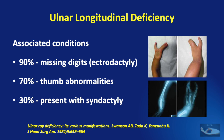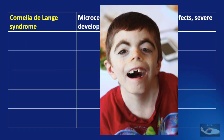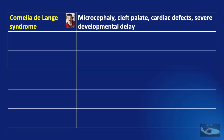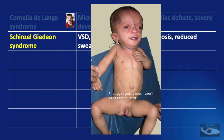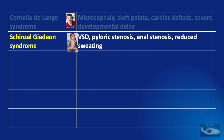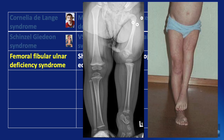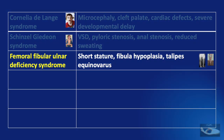The condition can also be associated with certain syndromes like Cornelia de Lange syndrome, which is associated with microcephaly, cleft palate, cardiac defects and severe developmental delay. The Schinzel-Gideon syndrome is associated with ventricular septal defects, pyloric stenosis, anal stenosis and reduced sweating. A common associated syndrome is the femoral fibular ulnar deficiency syndrome, where there is short stature, fibula hypoplasia and talipes equinovarus.